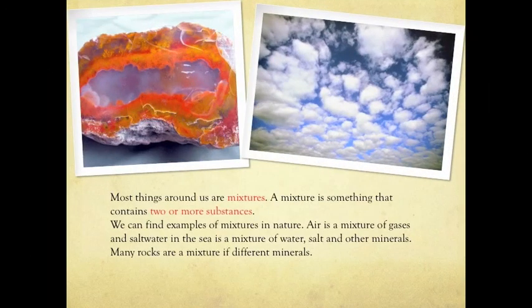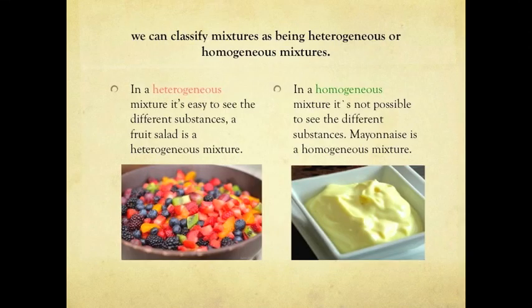Most things around us are mixtures. A mixture is something that contains two or more substances. We can find examples of mixtures in nature. Air is a mixture of gases, and salt water in the sea is a mixture of water, salt, and other minerals. Many rocks are a mixture of different materials. We can classify mixtures as being heterogeneous or homogeneous. In a heterogeneous mixture, it is easy to see the different substances. A fruit salad is a heterogeneous mixture. In a homogeneous mixture, it isn't possible to see the different substances. Mayonnaise is a homogeneous mixture.